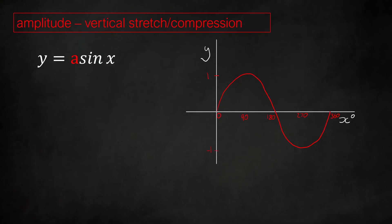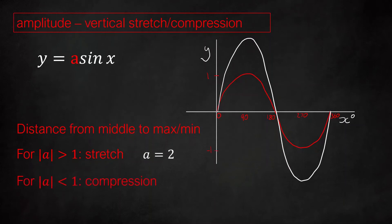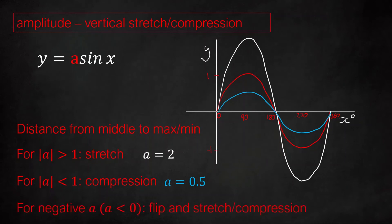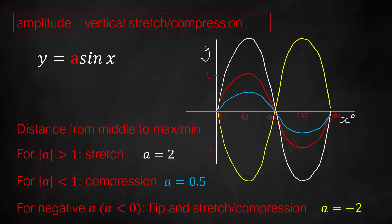Let's summarise what we've found. The amplitude is the distance from the middle to the max or minimum, or half the distance from the bottom to the top. The lines mean magnitude — just ignore the sign. If the magnitude of A is bigger than 1 it's a stretch, like if A equals 2. If the magnitude of A is less than 1 it's a compression, like if A is a half. We can also have A itself be negative, which means we do a flip and then a stretch or compression — so A equals minus 2 stretches by 2 but is also flipped about the x axis.